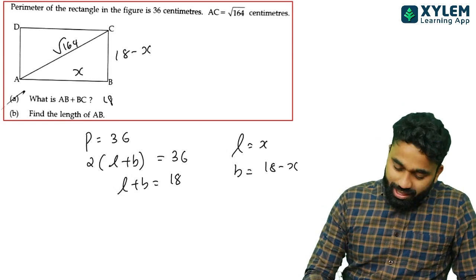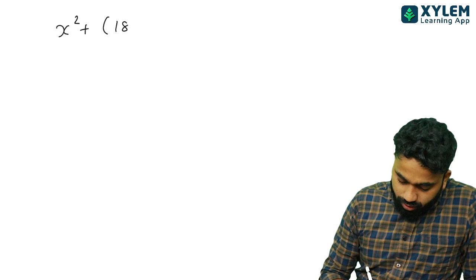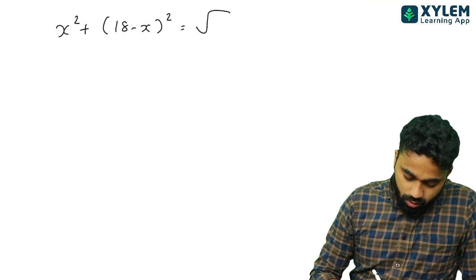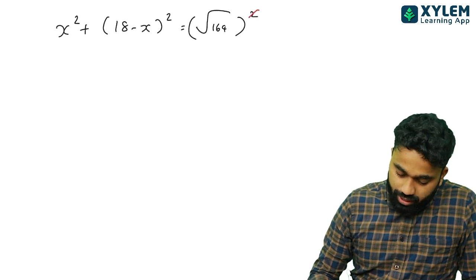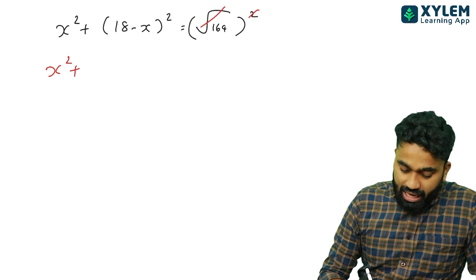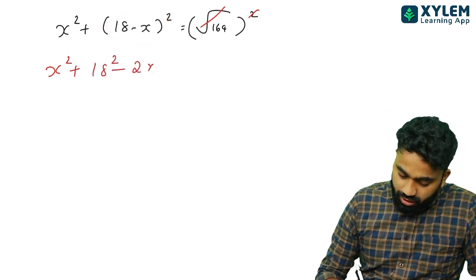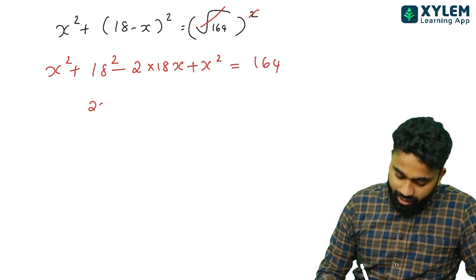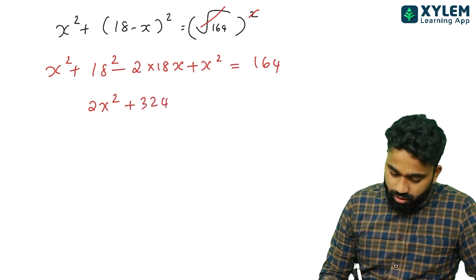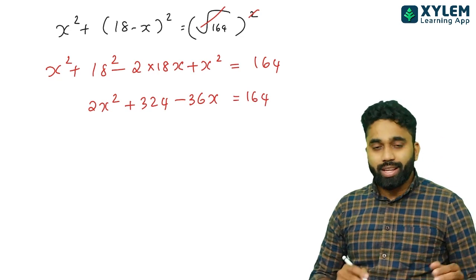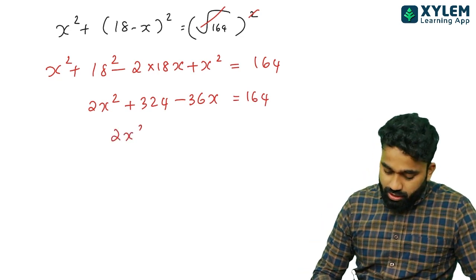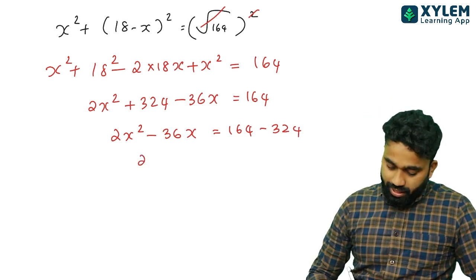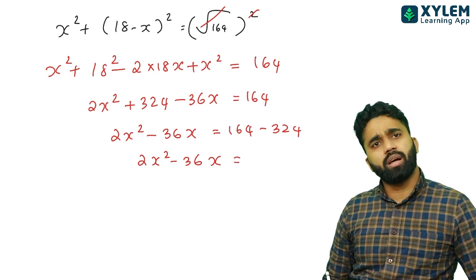Let's try this. Base squared plus height squared equals hypotenuse squared, so: x squared plus (18 minus x) squared equals 164. Expanding: x squared plus 324 minus 36x plus x squared equals 164. That gives 2x squared minus 36x plus 324 equals 164, then 2x squared minus 36x plus 160 equals 0, simplified to x squared minus 18x plus 80 equals 0.